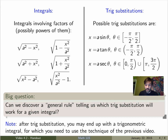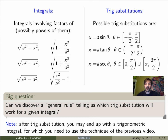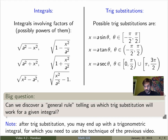We'll also study some examples in class and see what rule we get. Another question: why did I only write sin, tan, and secant substitutions, and not cosine, cotangent, or cosecant? I'll leave that as an exercise for class. It turns out you won't gain anything new by including those other substitutions, so these three are sufficient.